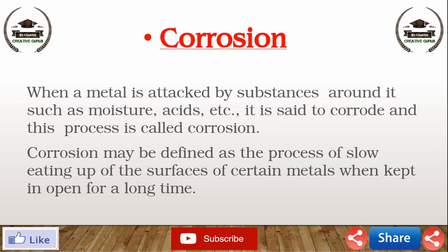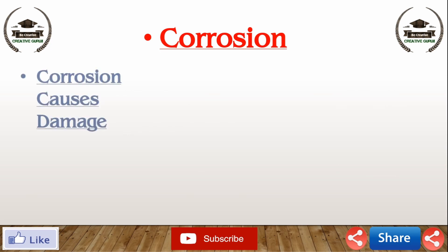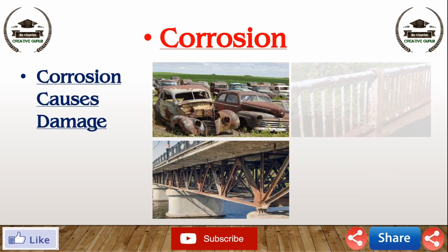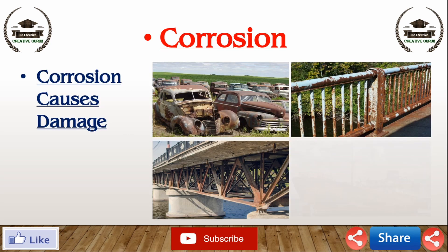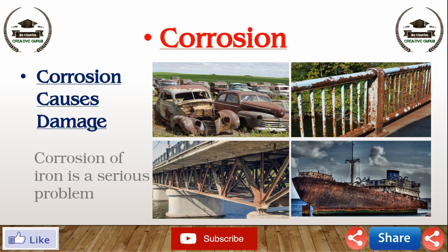Corrosion causes damage to car bodies, bridges, iron railing, ships, and to all objects made of metal, especially those of iron. Corrosion of iron is a serious problem. Every year, a big amount of money is spent to replace damaged iron.